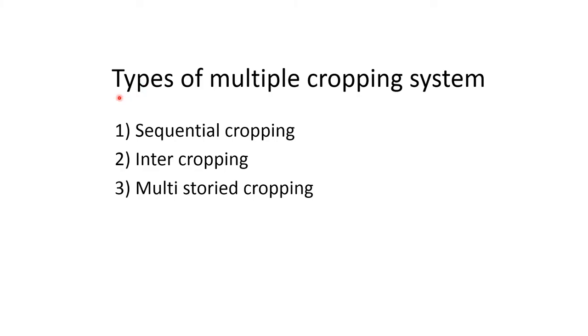There are three different types of multiple cropping system. One is sequential cropping, second is intercropping, and third one is multi-storied cropping.